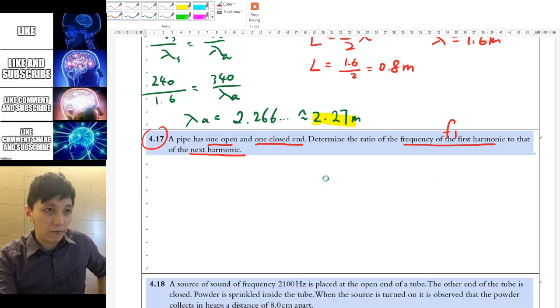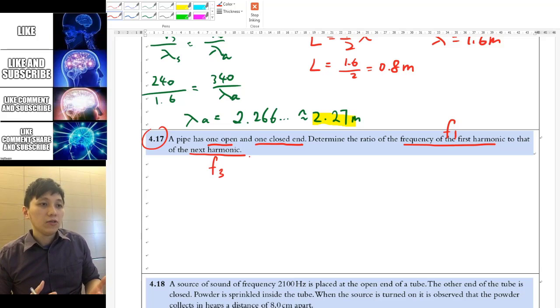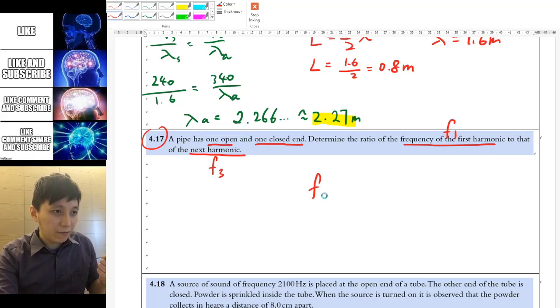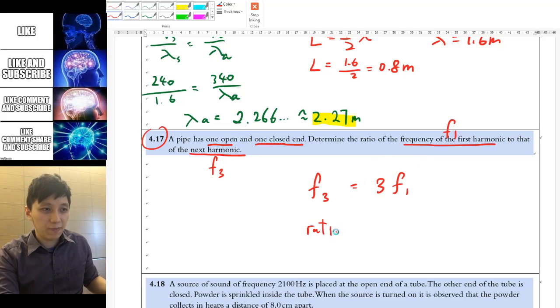And therefore, it is now F1 and the next one is F3 directly. And so if you can remember the relationship of this, you don't even need to calculate anything because the next frequency, which is the third harmonic, is going to be 3 times of the first one. And that is simply the ratio you have. So 3 is the answer.